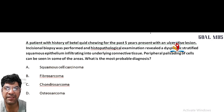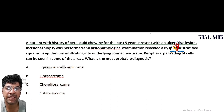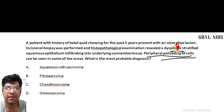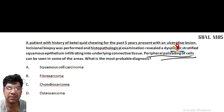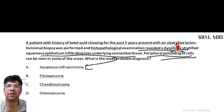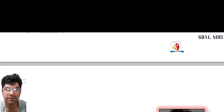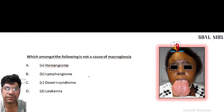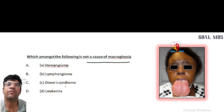A patient with history of betel quid chewing for the past five years presents with an ulcerative lesion. Incisional biopsy and histological examination reveal dysplastic stratified squamous epithelium with peripheral palisading of cells. The diagnosis is squamous cell carcinoma.